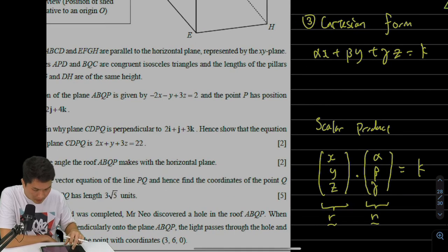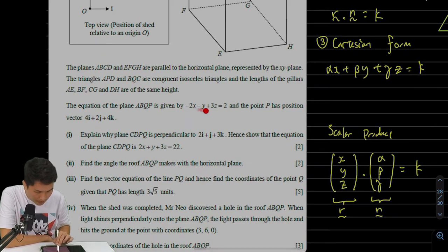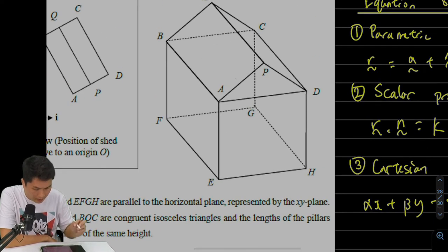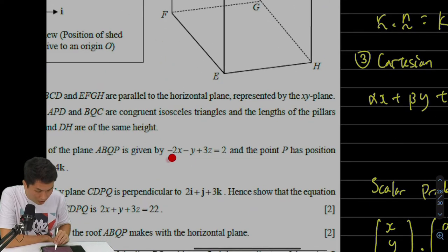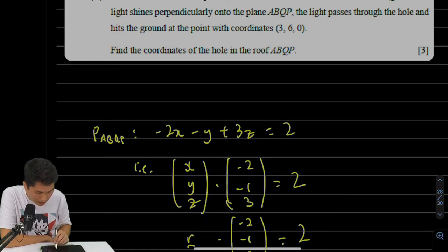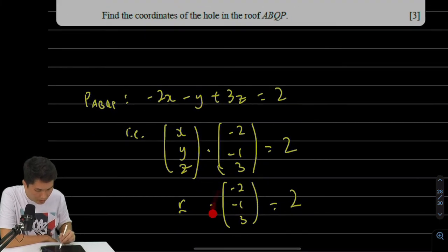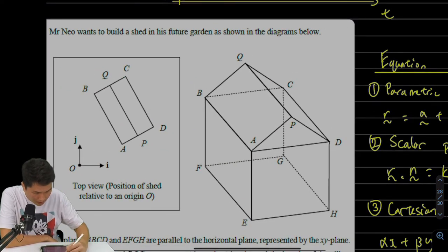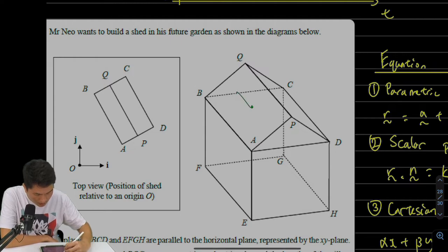Before part one, we're given the Cartesian equation of the left slanted roof ABQP: -2x - y + 3z = k. How do I get the normal vector? Exactly what we did just now—I can decompose this into (x, y, z) dot (-2, -1, 3). That tells me the normal vector of ABQP is (-2, -1, 3). Let's write that down and draw it on our diagram.